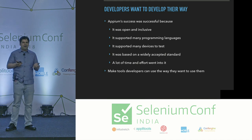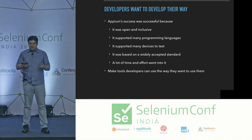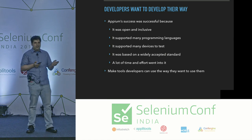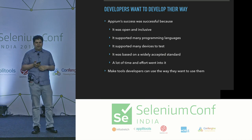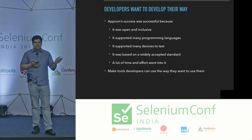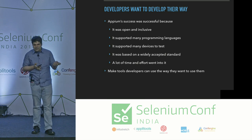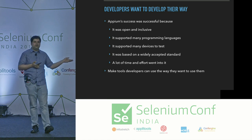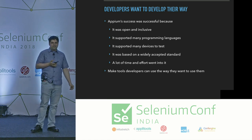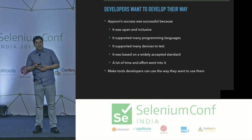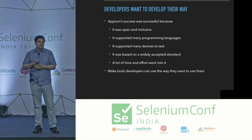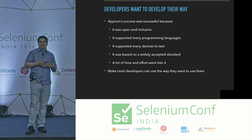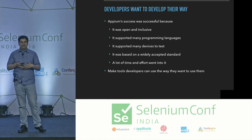The most important thing I learned is that developers want to develop their way. They don't want you to tell them what to use. You should always be open and inclusive and try to support as many kinds of development as possible. Let them use their programming languages, let them code the way they want. Appium is largely successful because it was based on something people already wanted to do — Selenium. The barrier to entry was non-existent: if you know how to automate a website, in two minutes I can show you how to automate an iOS app.